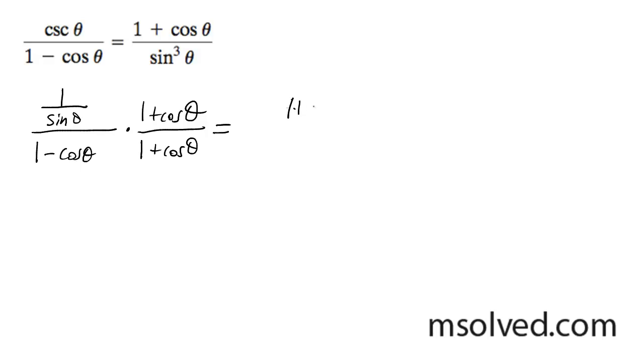So on top I get 1 plus cosine theta. And what I'm going to do, this 1 over sine theta, I'm going to go ahead and move this to the bottom. So I multiply the denominator portion. So down here I have sine theta.